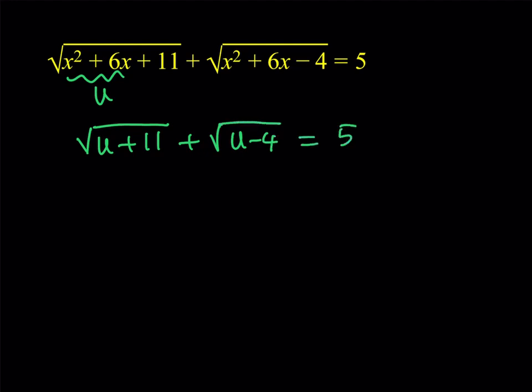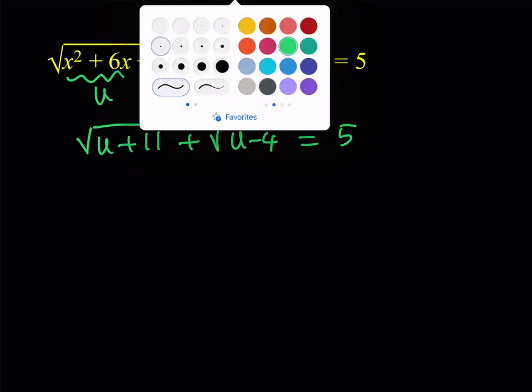The next step is going to be squaring both sides. Now here's a question. Should I isolate like leave one radical on one side and then leave the other one on the other side and then square or should I square like this? My opinion is I'm going to keep them on the same side and square this way. Let's proceed.